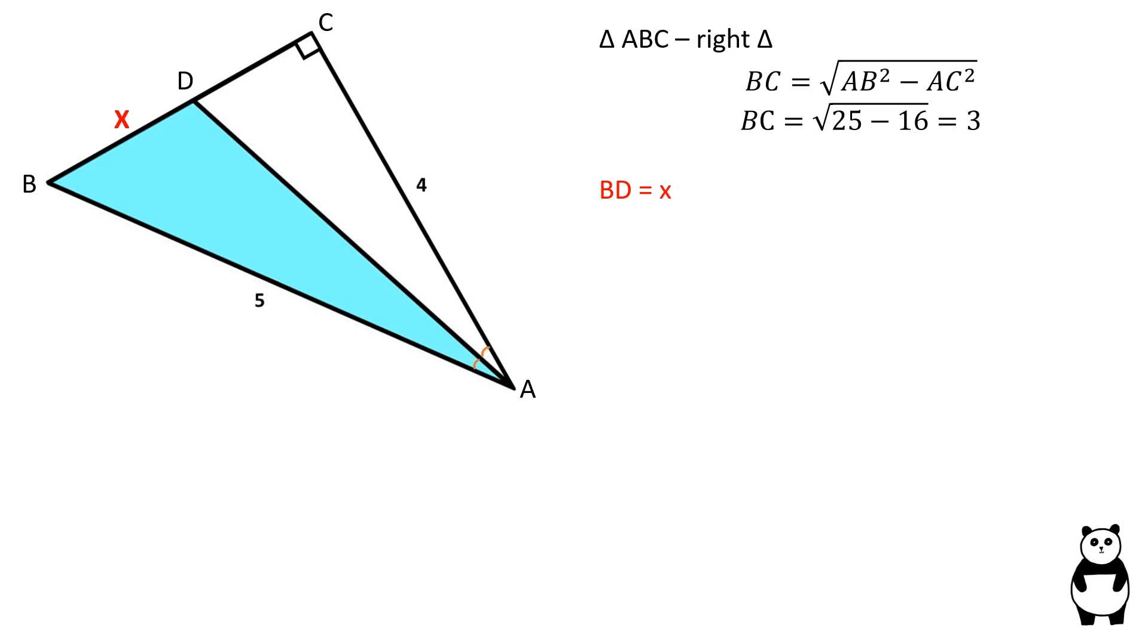If we represent BD as X, CD will be 3 minus X.